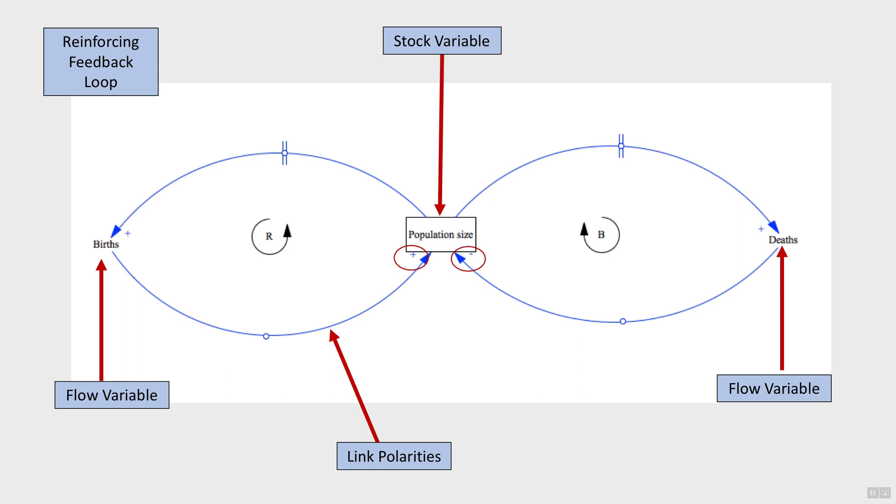When there's a closed circle, we call it a feedback loop. Feedback loops are denoted with an R for reinforcing, if the initial condition is amplified, and if the initial condition is balanced, it's denoted with a B.